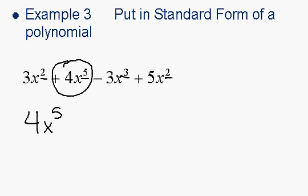And then you look at the exponent that comes next. We have a 2, a 3, and another 2. 3 is the biggest. Circle that sign with it. It's minus 3x to the 3rd.